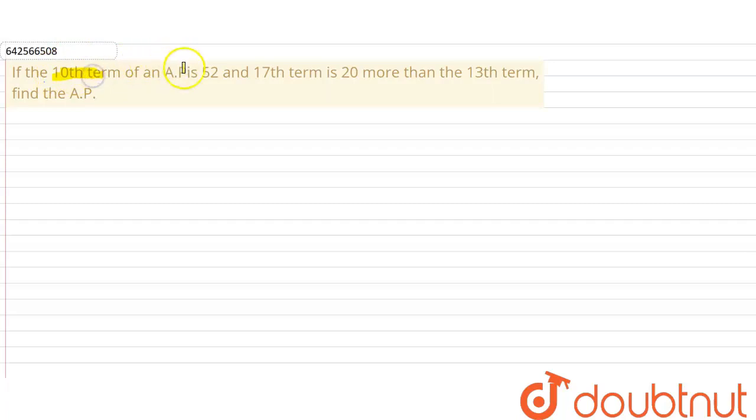The question is: if the 10th term of an AP is 52 and the 17th term is 20 more than the 13th term, then find the AP.